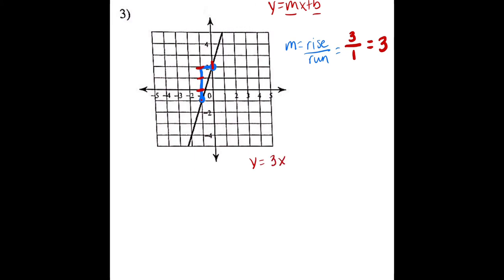Next we need to find our B, which is where our line is intersecting with the Y-axis. The Y-axis and our line are intersecting at positive two. So B equals two, meaning the rest of our equation is plus two. The equation for this line is Y equals three X plus two. That tells us our line is fairly steep with a slope of positive three, and it intersects the Y-axis at two.